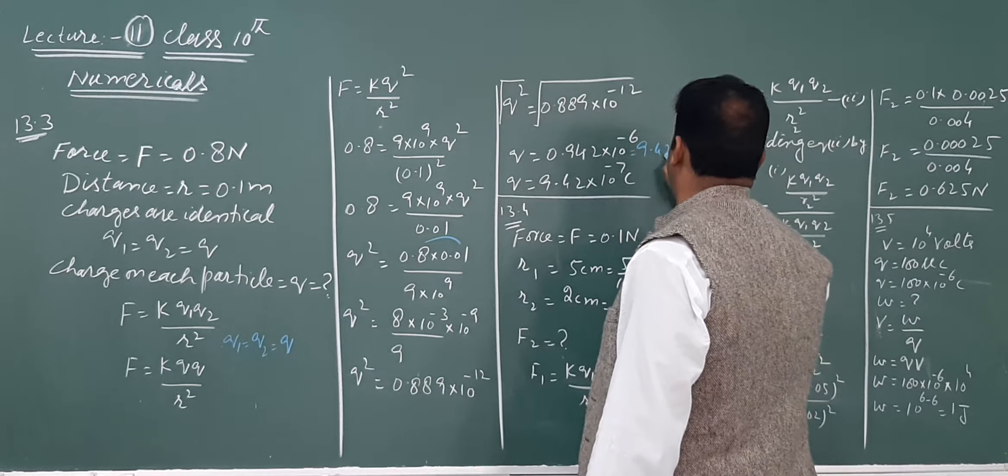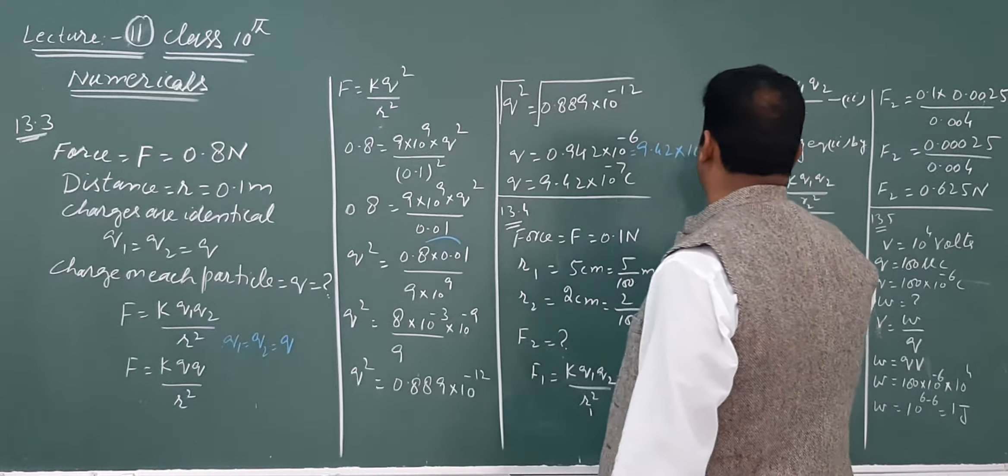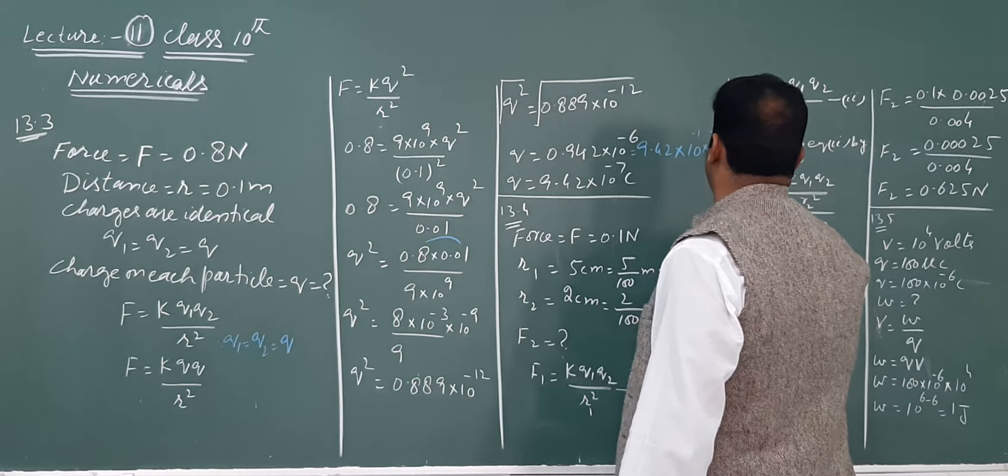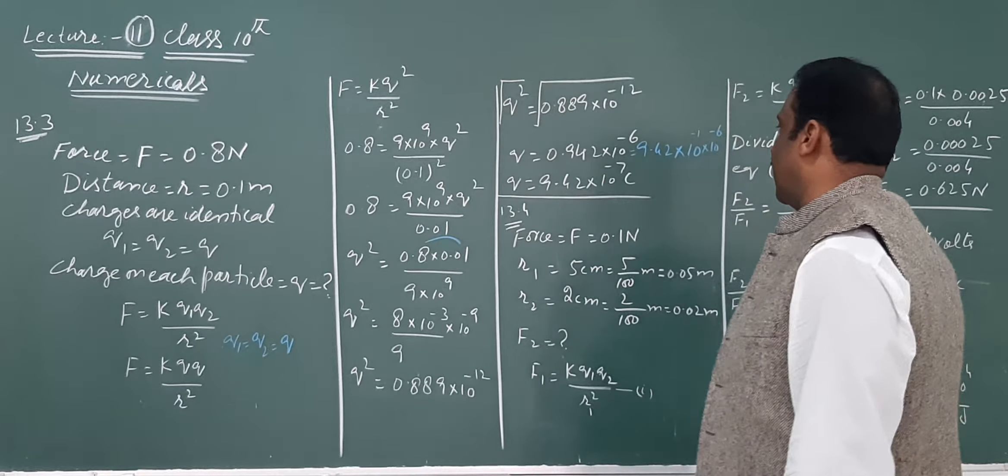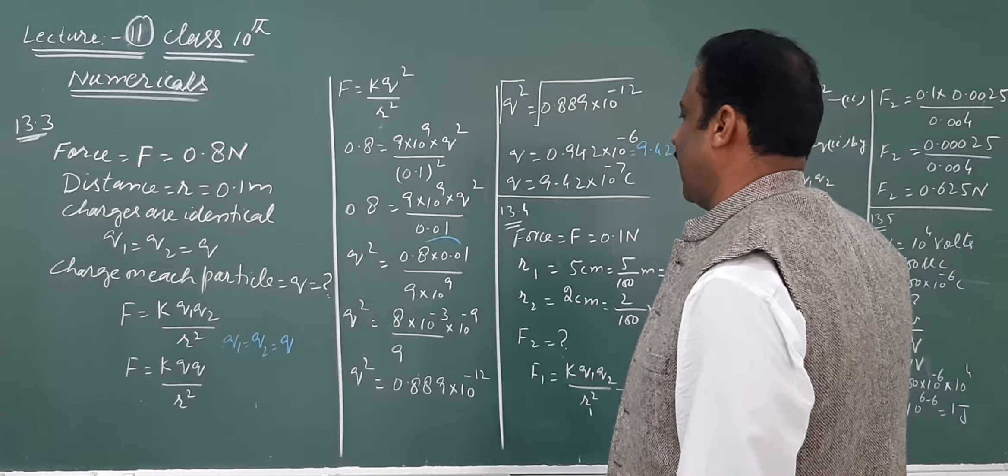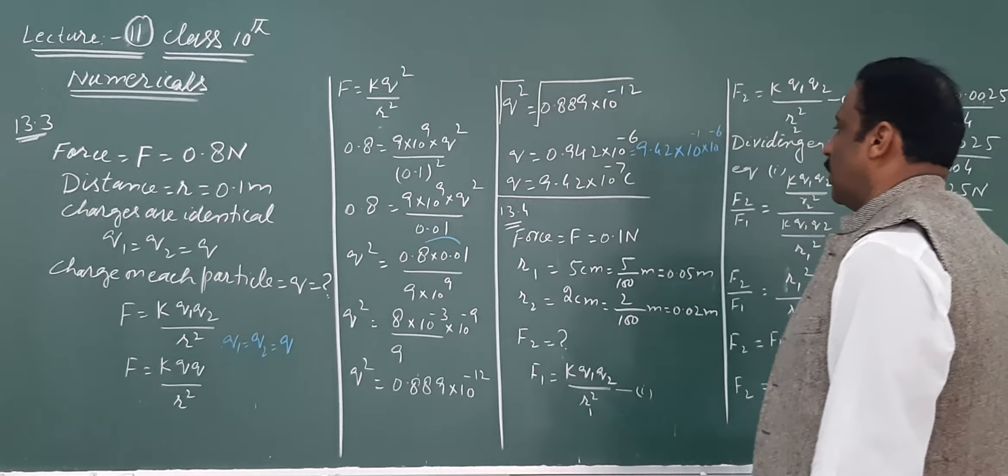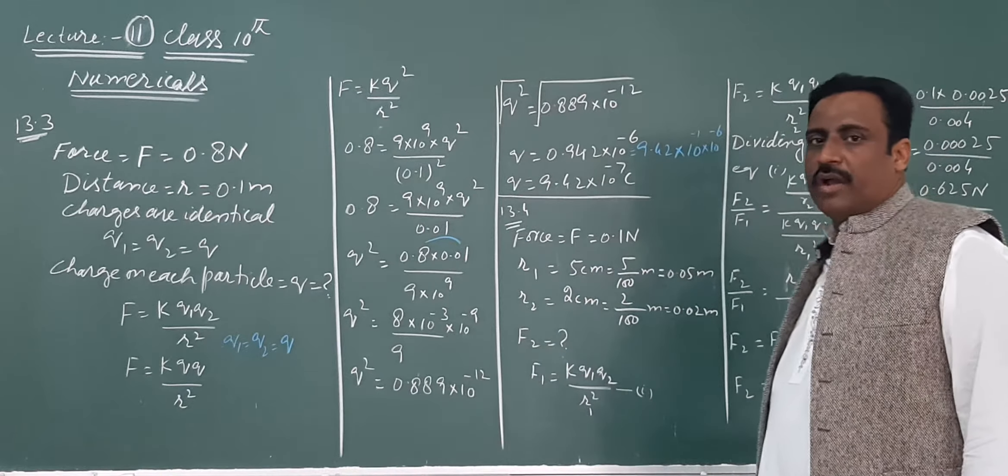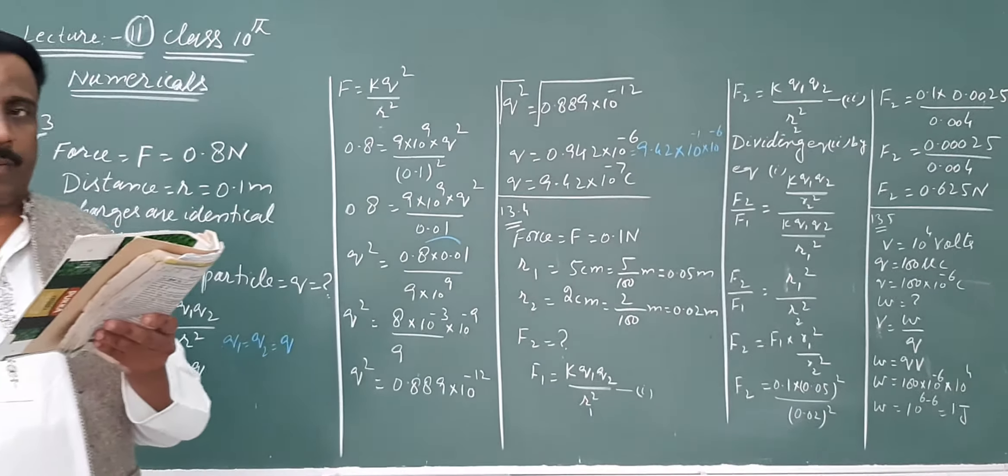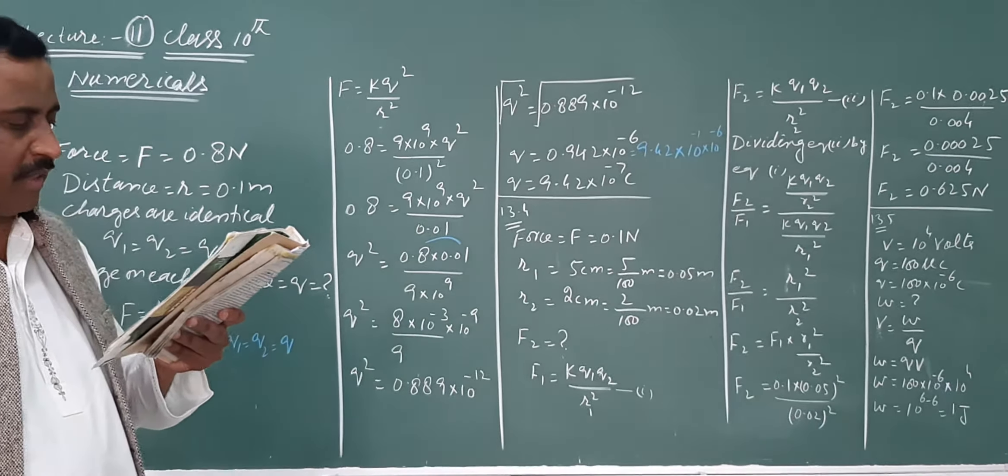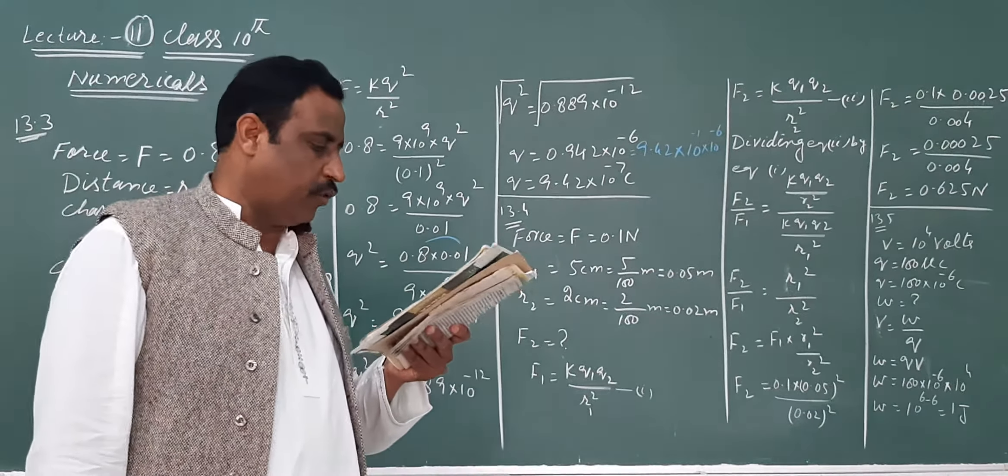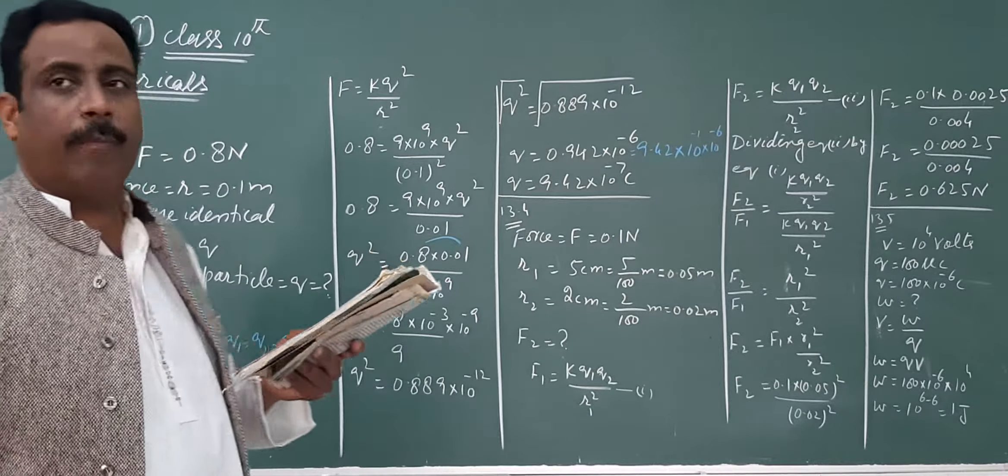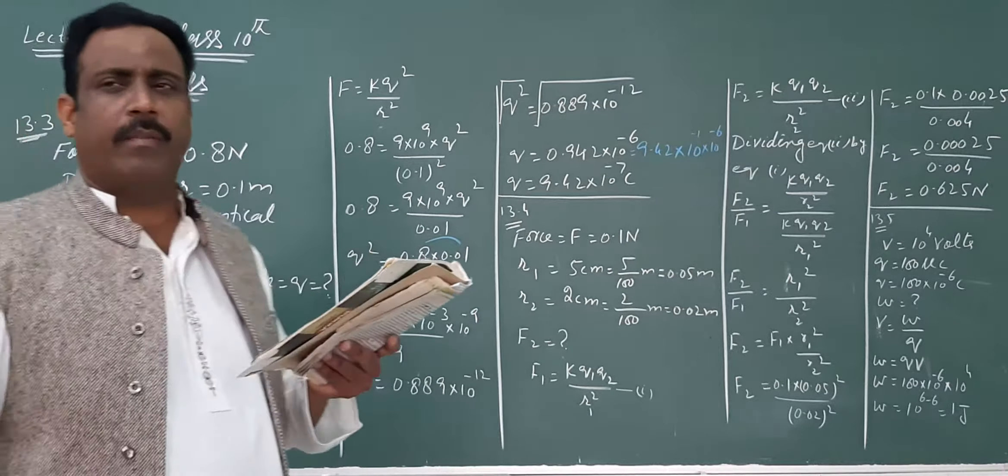Now what do we do? To find Q on each particle, we find the square root. Q equals square root of 0.8 divided by 9, and the powers: 10 to power minus 3 divided by 10 to power 9 gives 10 to power minus 12. Taking square root of 10 to power minus 12 gives 10 to power minus 6. The final answer becomes approximately 0.94 multiplied by 10 to power minus 6 coulomb.